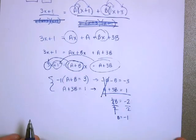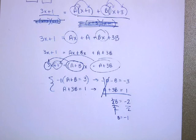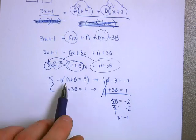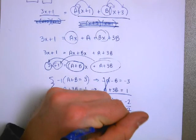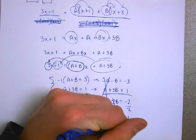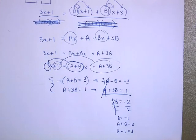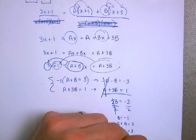So B must be -1. Running out of space there. B must be -1. Now I can go and I can plug in to this original equation. If A+B equals 3, and B is -1, that means A-1 equals 3.